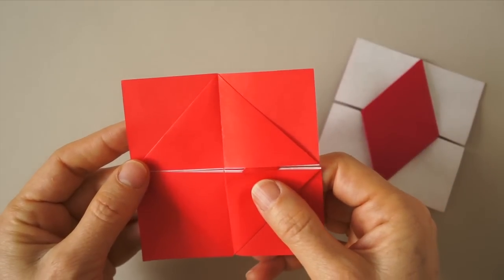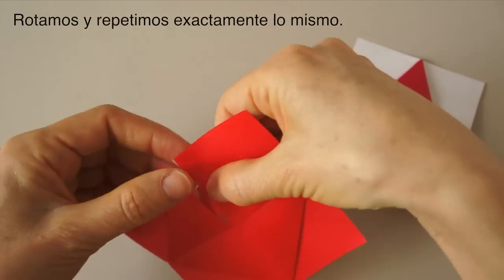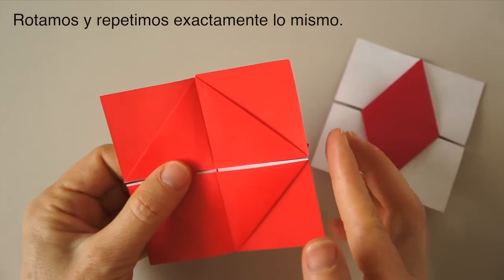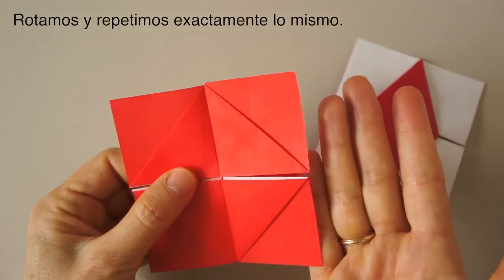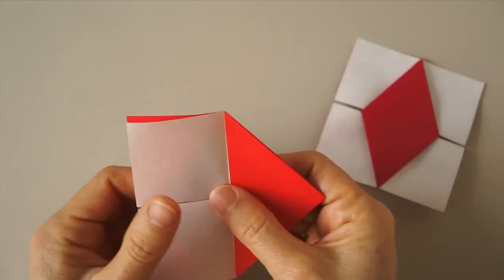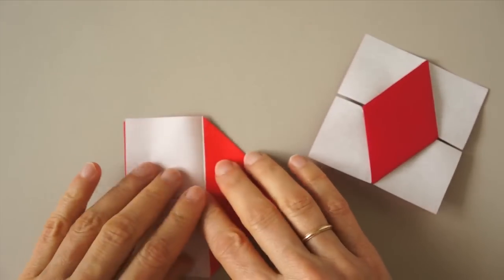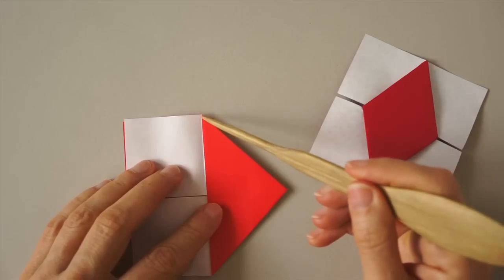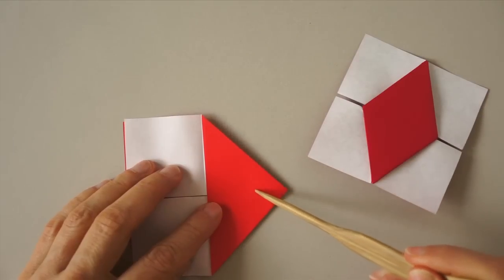Now, we are going to rotate and do exactly the same on this side. We bring these flaps to the left and we are going to make this rabbit ear fold here.